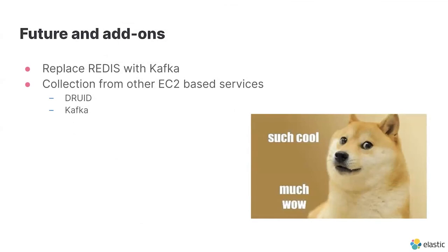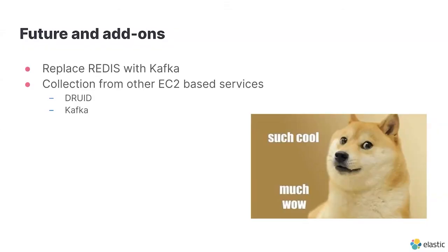For future add-ons, the first thing is to replace Redis with Kafka. At the beginning we decided to use Redis, but as we added more and more applications and collected more and more logs, Redis really became a bottleneck. Kafka is more robust and will provide this architecture with a better design and a better solution. The second thing would be collecting more data for more EC2-based services — at Nielsen Israel we're running Druid, Kafka, and Schema Registry, all self-managed on EC2 servers. Since EMR is just a bunch of EC2 servers running together, if you get FileBeat and MetricBeat installed on those servers, you can collect more and more information.